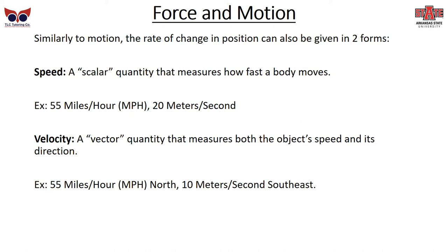Velocity, like displacement, is a vector — it has a magnitude and a direction, meaning both speed and direction. So 55 miles per hour north, or 10 meters per second southeast — you have to have both a size and a direction.